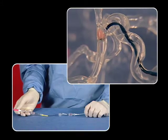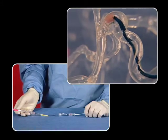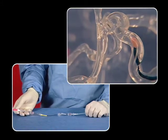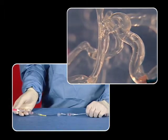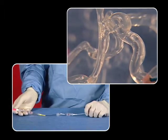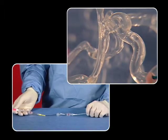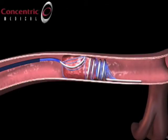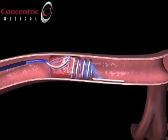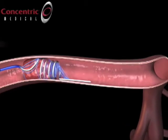As the clot becomes dislodged from the vessel wall, retract the retriever, microcatheter, and distal access catheter as a system to the balloon guide catheter. You will get a sense of the clot being dislodged when you see the retriever's distal loops maintaining their shape while at the same time moving proximally toward the internal carotid artery.